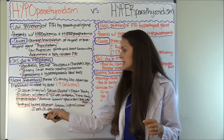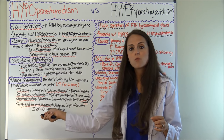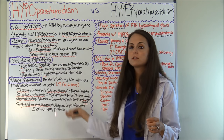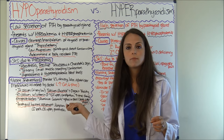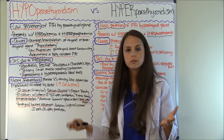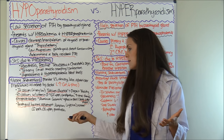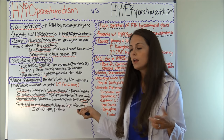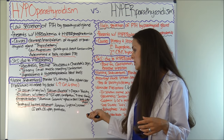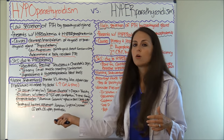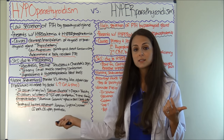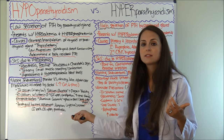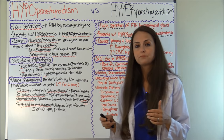Last but not least, parathyroid hormone replacement — these patients are deficient in PTH, so you can give it to them. A medication called Natpara is given as an injection. However, you want to monitor calcium levels and watch for any GI upset or paresthesia.